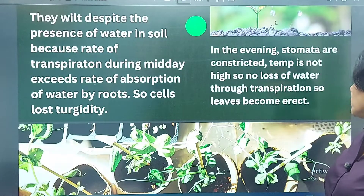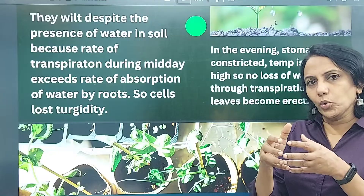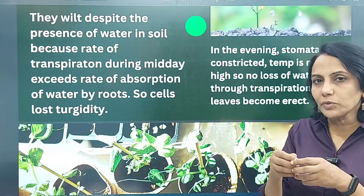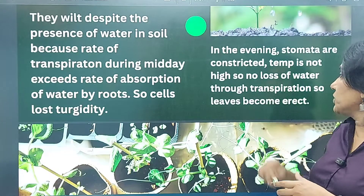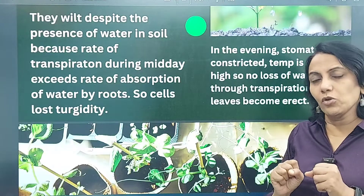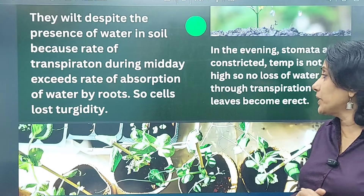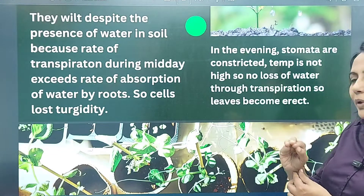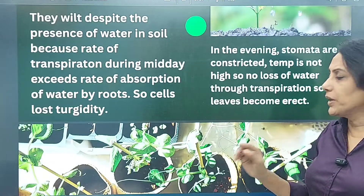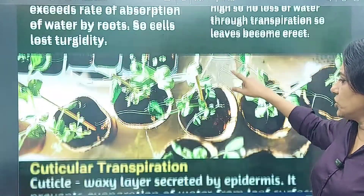In the evenings, the temperature is not as high so less water evaporates. The stomata close, so less water vapor is lost. Because of these factors, the leaves regain their turgidity and become erect again in the evening.